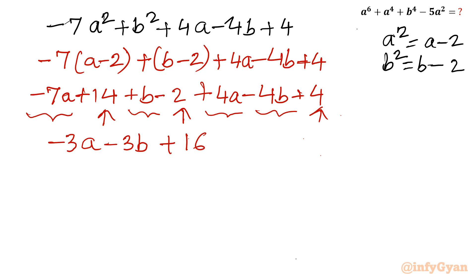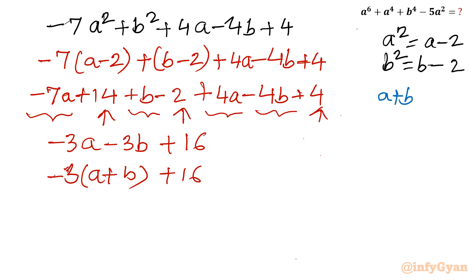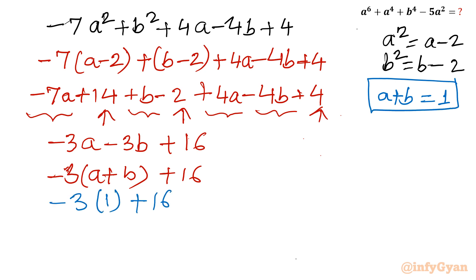Taking minus 3 common from the first two terms gives minus 3(a plus b) plus 16. Using Vieta's method, we calculated a plus b equals 1. So the result is minus 3 times 1 plus 16, which is minus 3 plus 16, giving the final answer of 13.